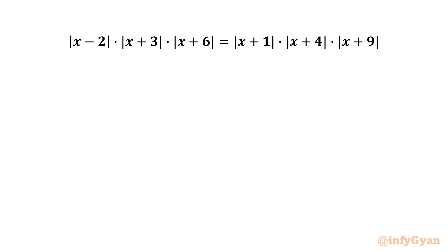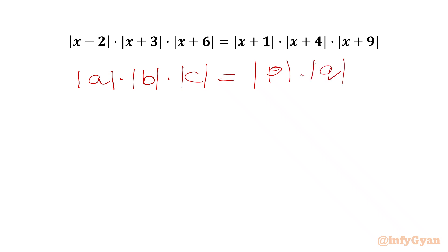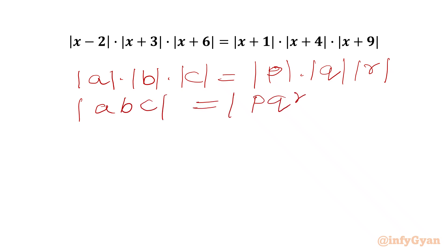So we have a product of absolute values of functions on both sides. We know that the product of absolute values of functions equals the absolute value of the product of functions. So mod(a) times mod(b) times mod(c) equals mod(p) times mod(q) times mod(r), which we can write as mod(abc) equals mod(pqr), or equivalently abc equals plus or minus pqr.